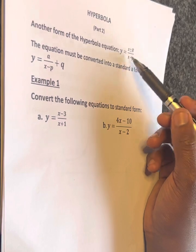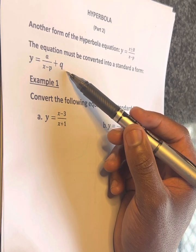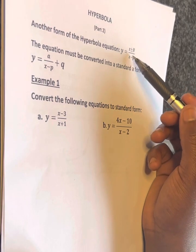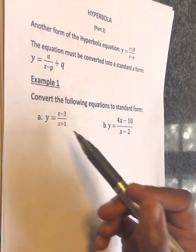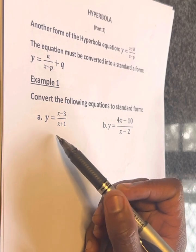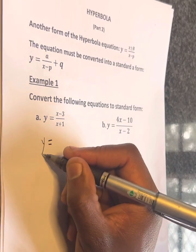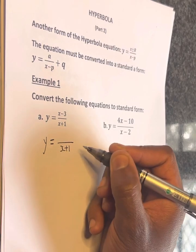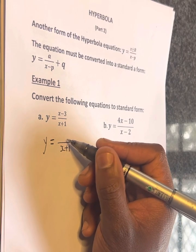For example, this is x minus 3. So just take this simple form. We need to convert this equation. So this is equal to y equals x minus 3 over x plus 1. So now we have x plus 1 here.